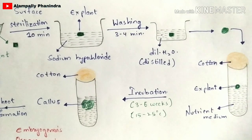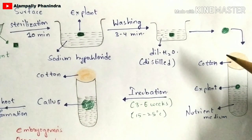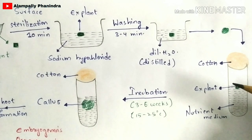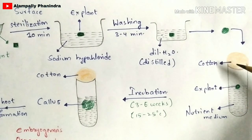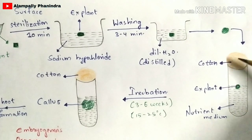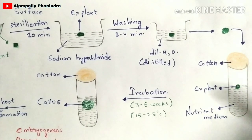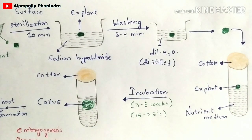The reason you close the test tube with cotton is because there is a presence of harmful bacteria in the environment, and if harmful bacteria enter the test tube, they could contaminate the culture. To prevent this, you keep the cotton as a closure for the test tube. This is how you prepare the basic culture.